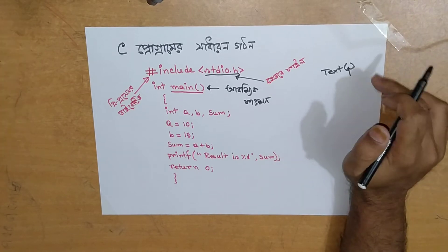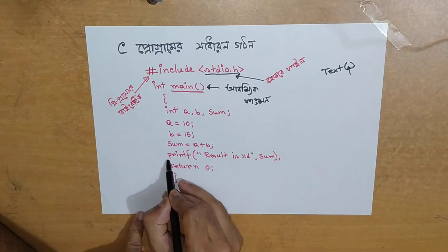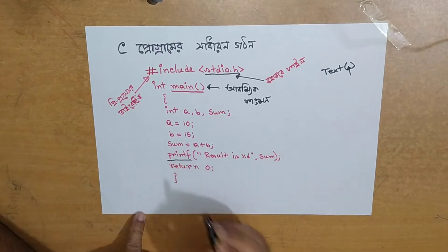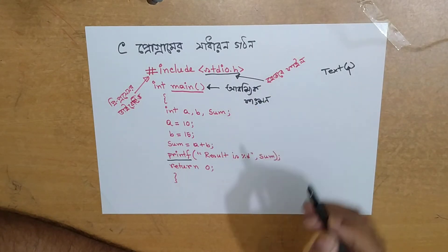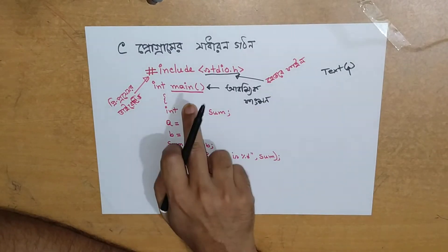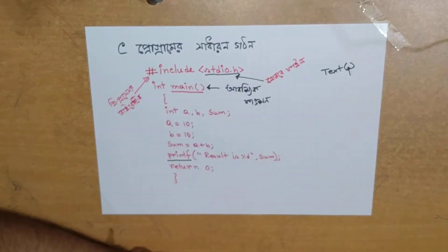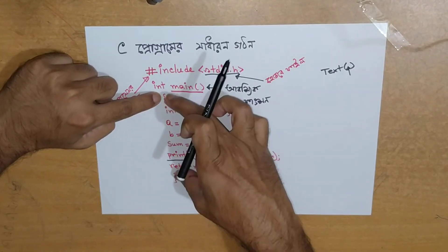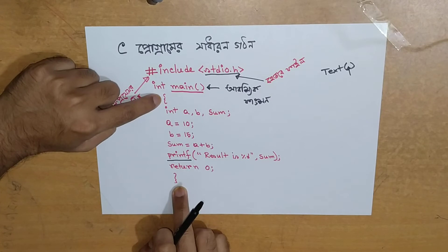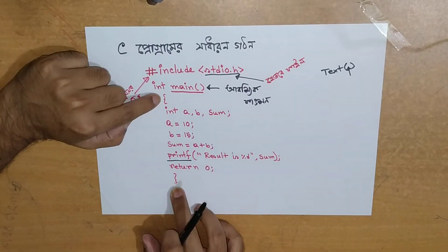So if you have the main function, you can see the main function. This is the main function. In the second bracket, we have to start the second bracket and then we have to start the main program, as we will check here.